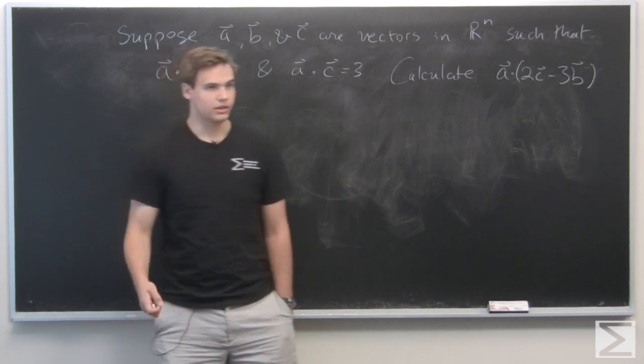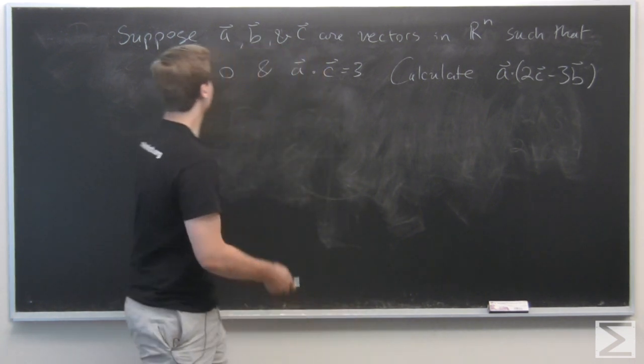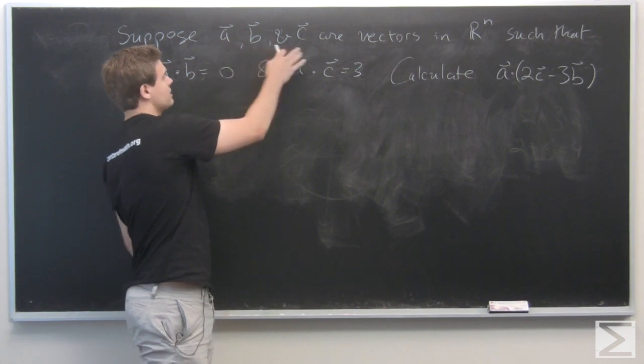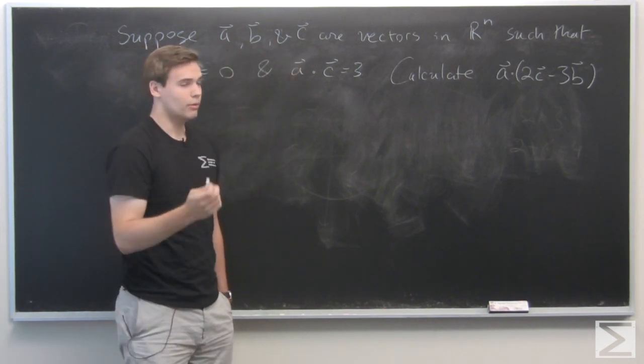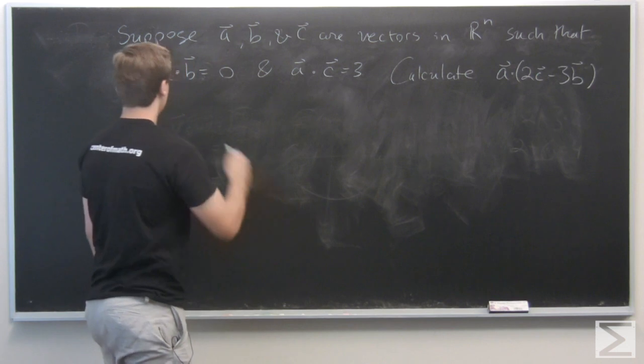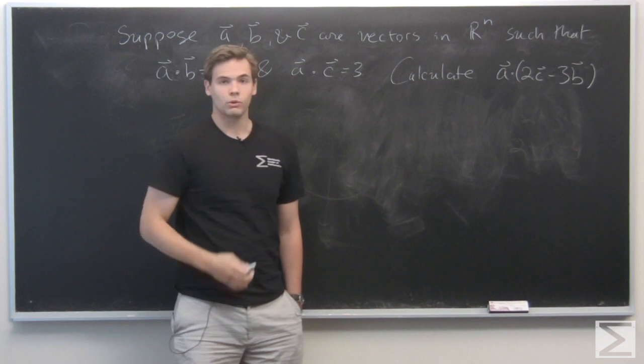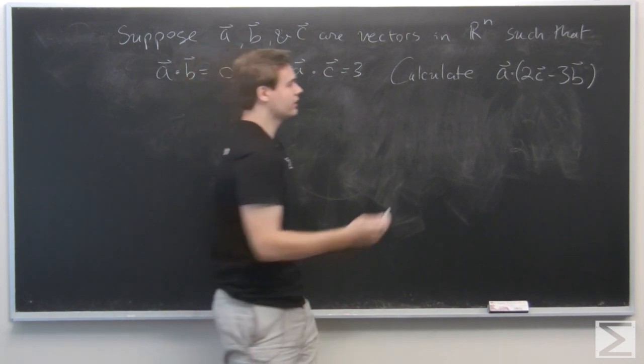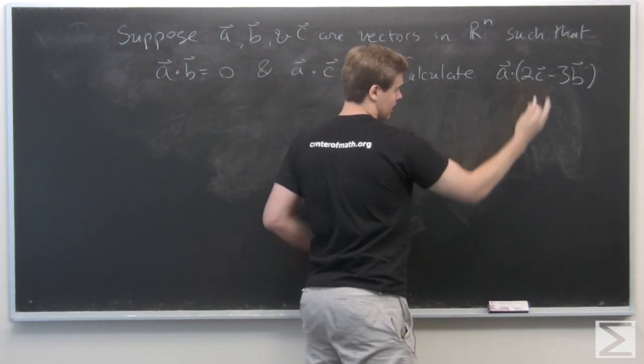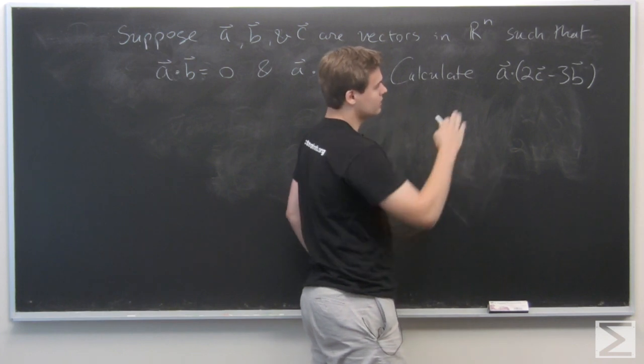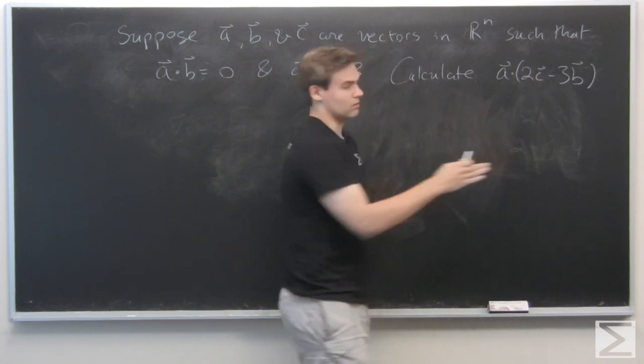Using this, say we're given three vectors a, b, and c in R^n. All we know about them is that a dot b equals zero and a dot c equals three. We want to use these facts to calculate a dot (2c minus 3b).